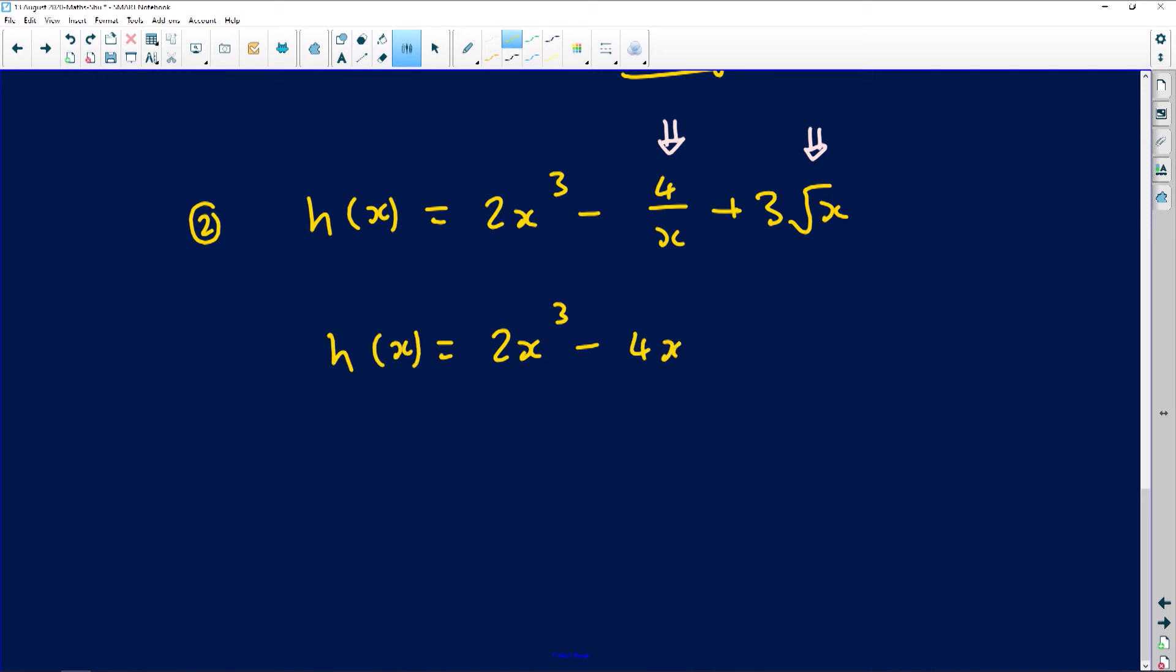So 4 over x can be rewritten as 4x to the power negative 1. You're moving it to the numerator. The exponent changes the sign. And then the square root is as good as a half.